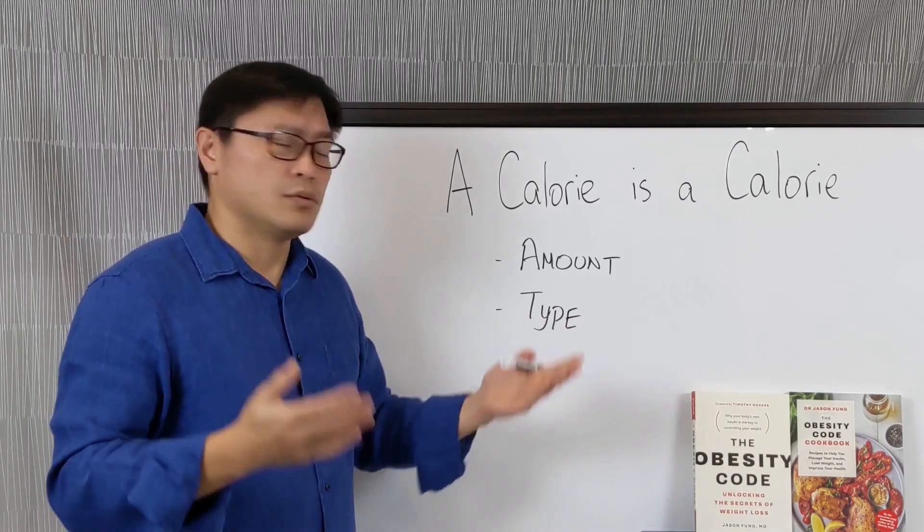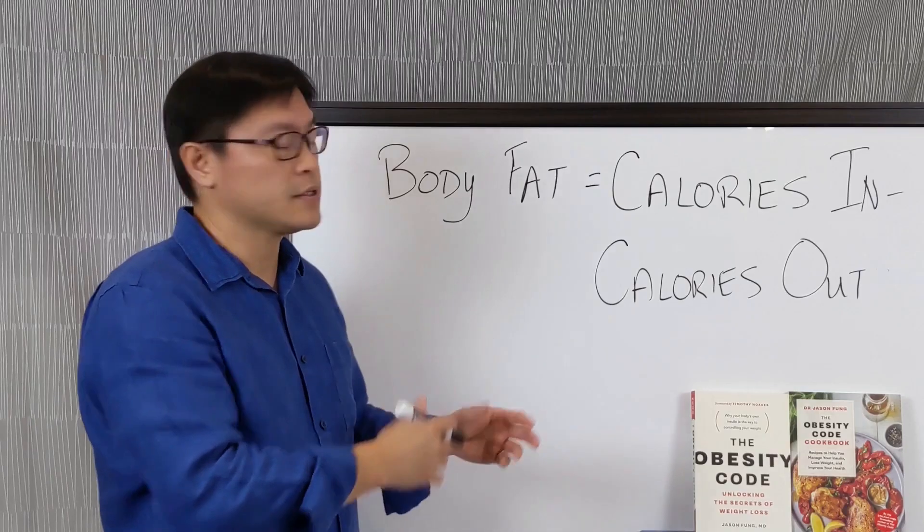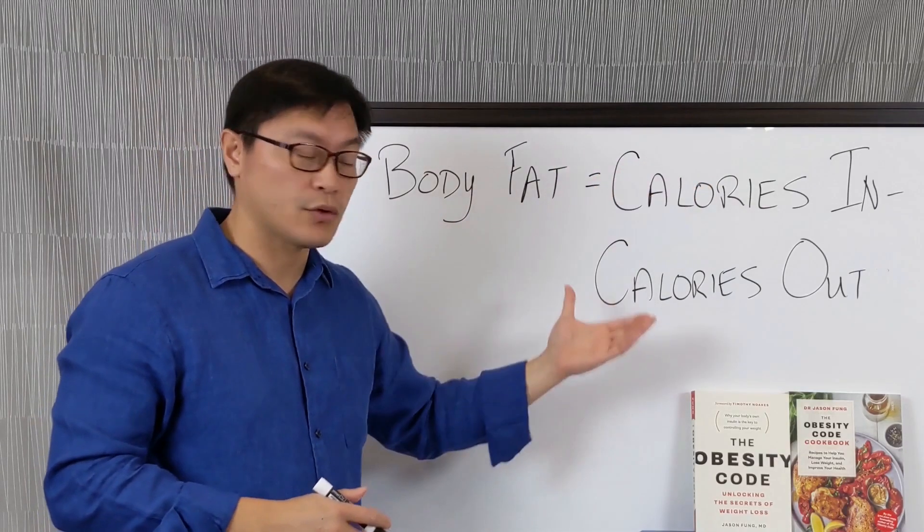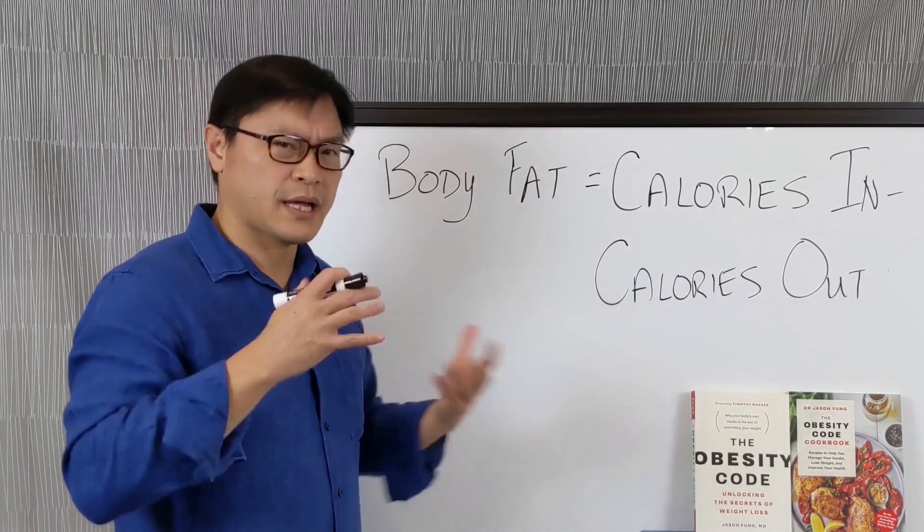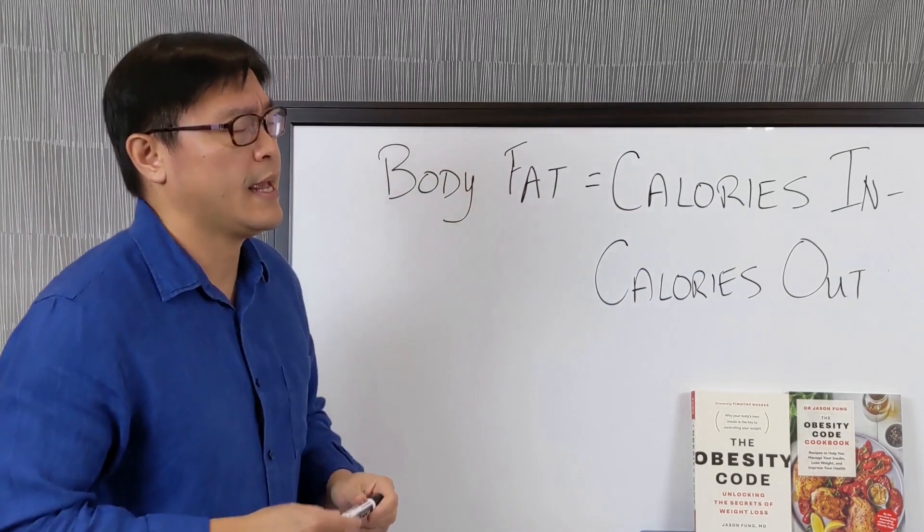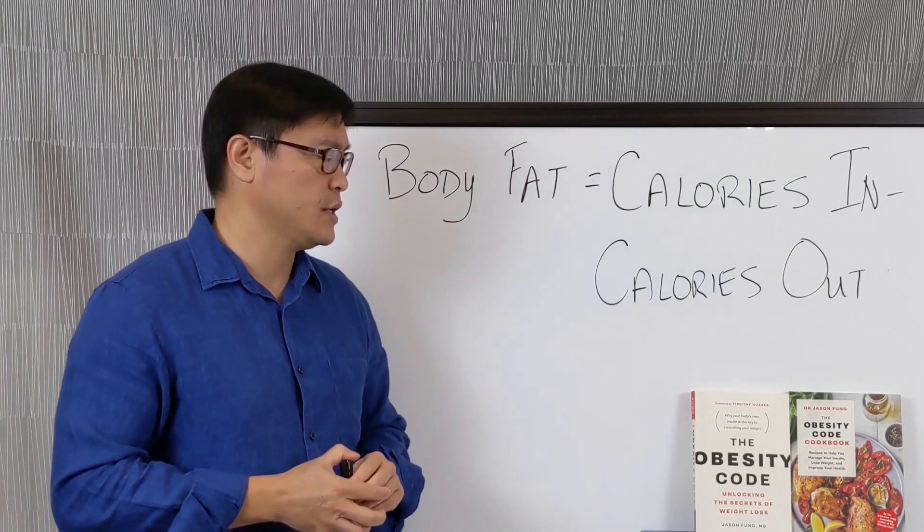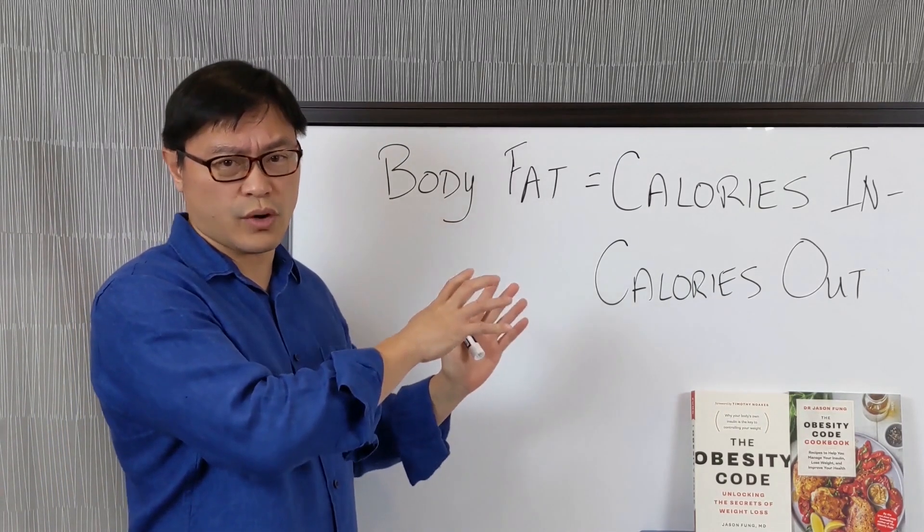So what does it come down to? Is a calorie a calorie? When we look at this energy balance equation, everybody comes back to this. That is, body fat equals calories in, minus calories out. And therefore, that's why people say a calorie is a calorie, because the only thing there is calories, right? And the problem with this is that this looks like it's always correct, and it is. But it's much more complex.